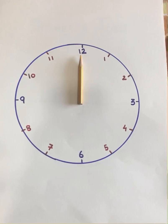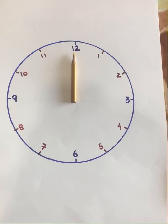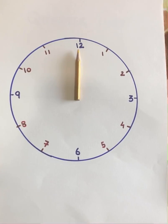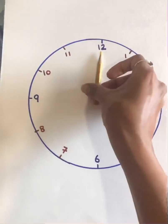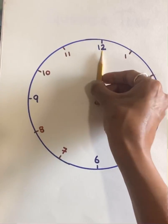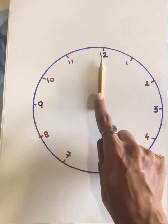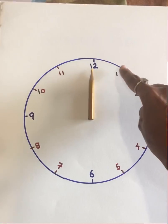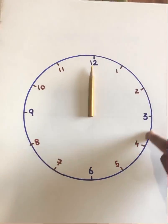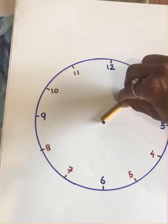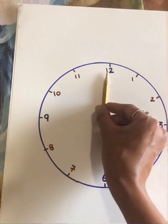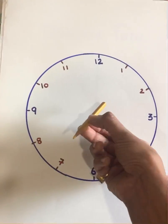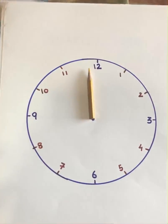You all know how the hands of the clock move. Clockwise rotation is the one when an object moves in the same direction as the clock's hand. Let's take an example. I have taken this color pencil. Imagine that this is the hour or the minute hand of a clock. The hands move in this direction. So when an object rotates in the same direction as the hands of the clock move, it is known as clockwise rotation.